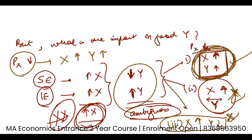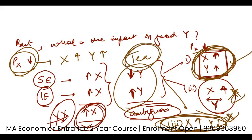If X and Y are substitute goods, then when the price of X falls, people switch to X and the consumption of Y decreases. The example here is tea and coffee: if coffee becomes cheap, I will consume more coffee and reduce the consumption of tea. So only the third scenario is possible for substitute goods.